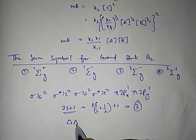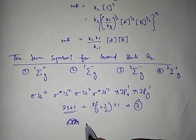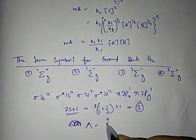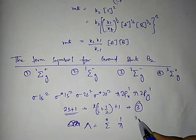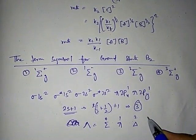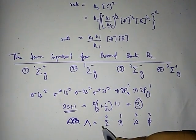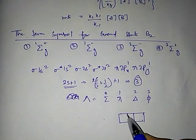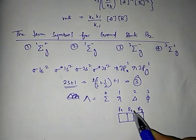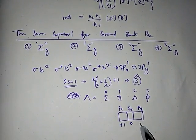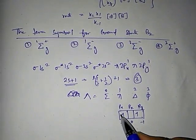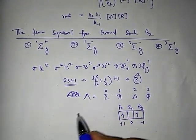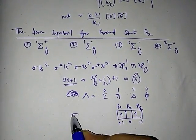For the value of Λ: σ corresponds to Λ=0, π to Λ=1, δ to Λ=2, φ to Λ=3. The two electrons are in π2pₓ and π2p_y, with ml values +1 and −1, so Λ = +1 + (−1) = 0. The term symbol label is therefore Σ.